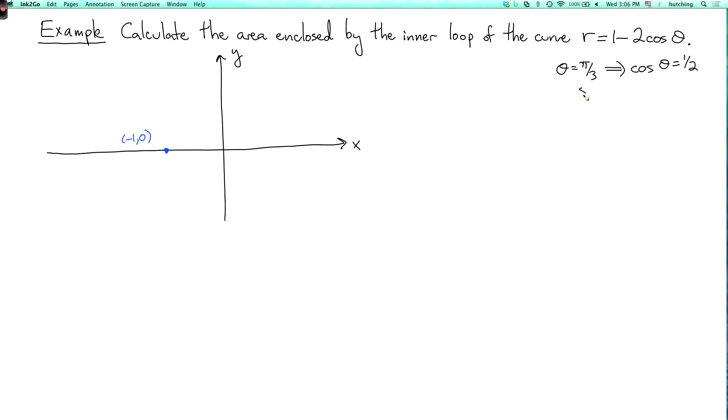It will also happen at 5 pi over 3. We'll need that later. So let's draw these lines here as guides. This is theta equals pi over 3, and this line here is theta equals 5 pi over 3.